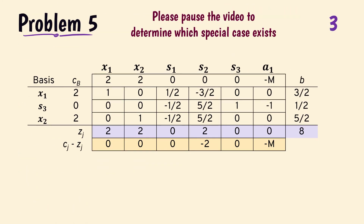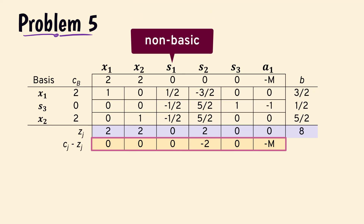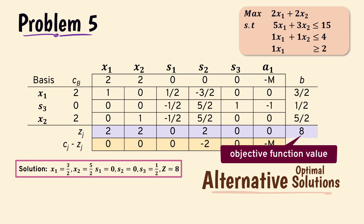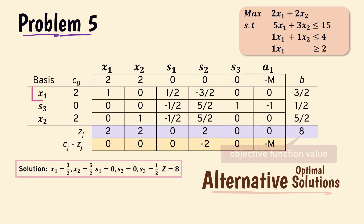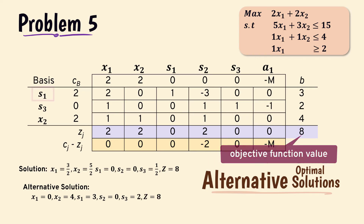Problem 5. This is a final tableau since all the entries are non-positive in the net evaluation row. Note, however, that s1 is non-basic but has a zero value in the net evaluation row. This indicates that we have alternative optimal solutions, since s1 can enter the basis without changing the objective function value. We have the current solution with an objective function value of 8. Suppose we decide to replace x1 with s1 in the basis — that produces a new solution with the same objective function value of 8, indicating an alternative optimal solution.